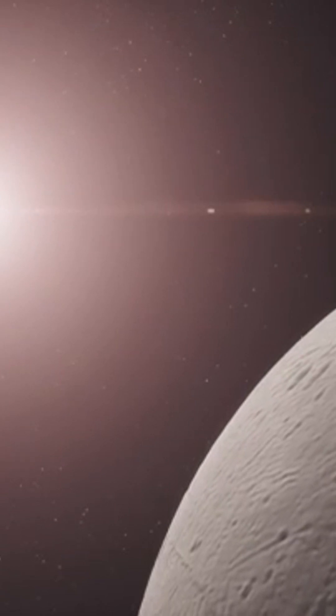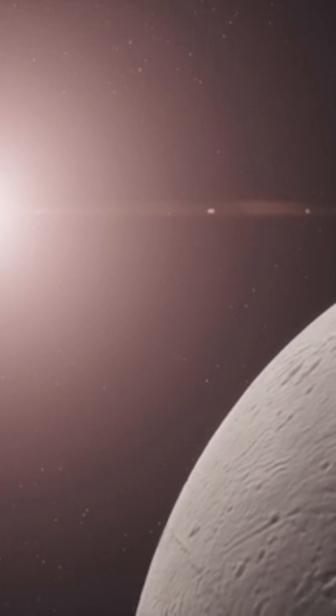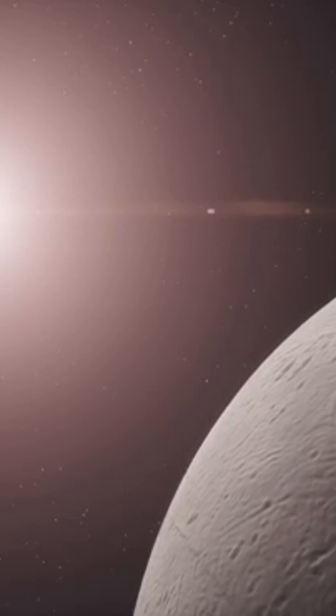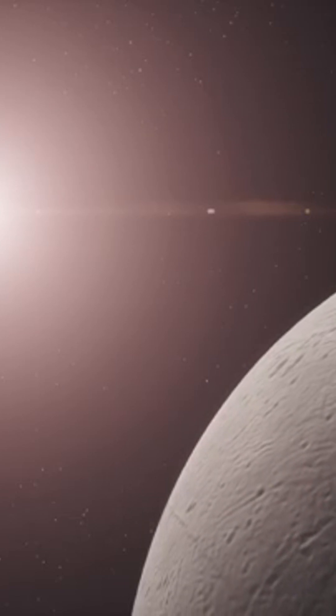As you can see, it looks nothing like the other Saturnian moons, with its shimmering white surface, crevices, cracks, and protrusions.